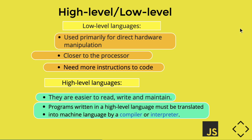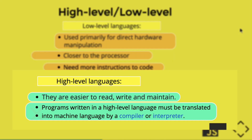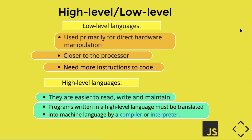When you use a compiler or interpreter, the program written in high-level languages must be translated into machine language. The system translates it so the computer can understand. JavaScript is a high-level language.